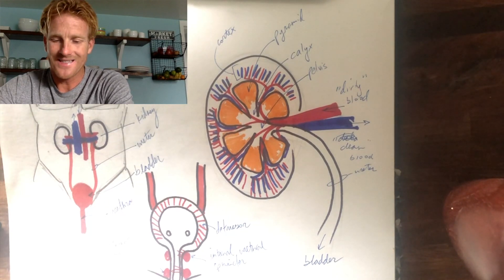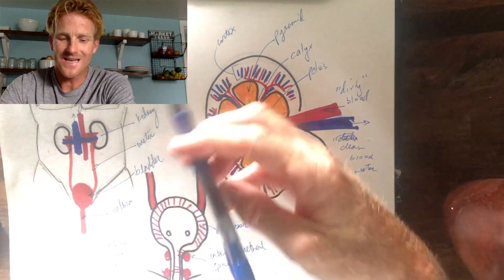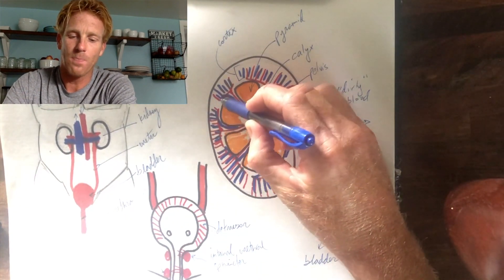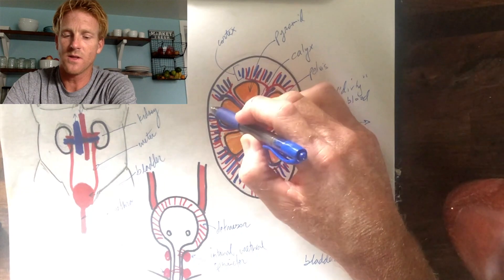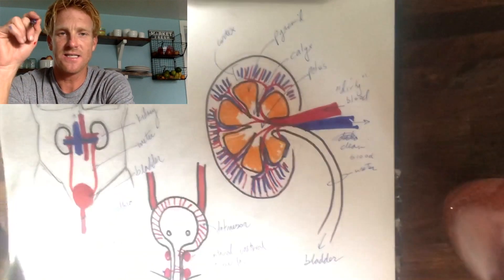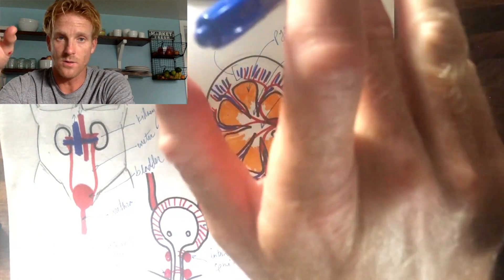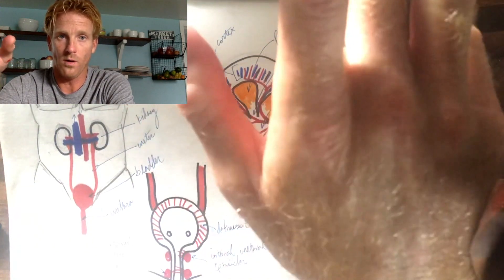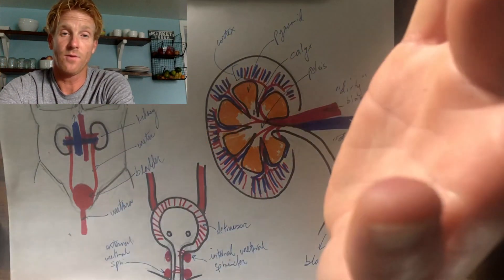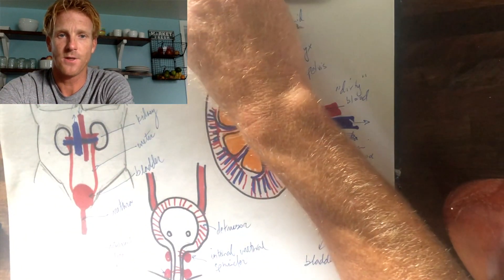Next time we'll zoom in and focus on exactly what happens at the border between the cortex and the medulla, because that area contains tiny little tubes that do all the hard work of filtering and cleaning out everything we don't need from the blood.